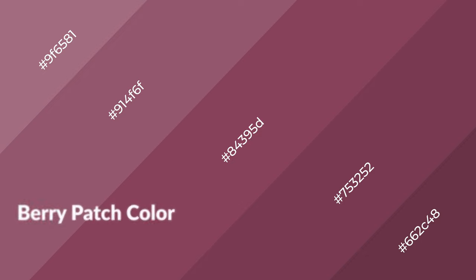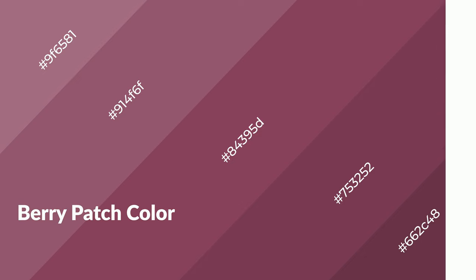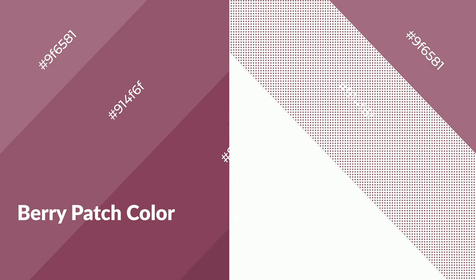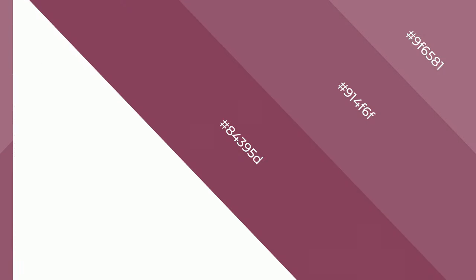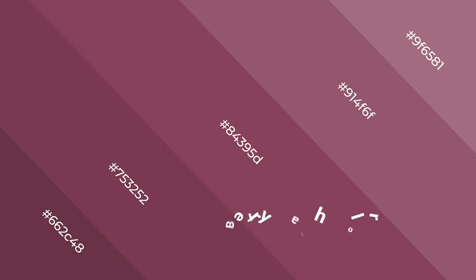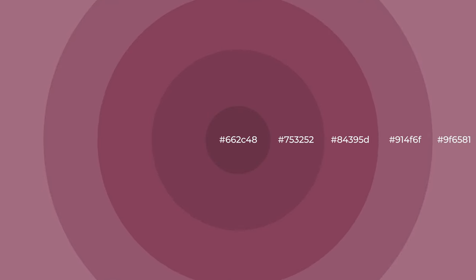Berry patch is a warm color and it emits cozier and active emotions. Warm colors are symbols of warmth, fire, heat, and sunshine. It also evokes joy, passion, love, and even anger. You can see them used in restaurants and gyms.